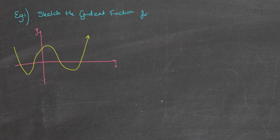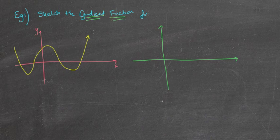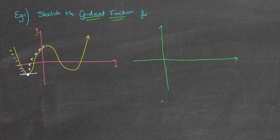Let's look at a question: sketch the gradient function for this particular graph. A lot of the time they'll simply draw the graph for you, and you need to redraw the gradient. What are you concerned with? First, because we're sketching the gradient function, we're interested in the actual gradient values. Looking at my graph here: negative, negative, negative — then a value of zero — then positive, positive, positive — then zero again at the next turning point — then negative, negative, negative — then zero — then positive.